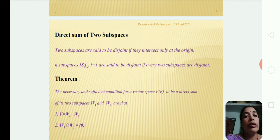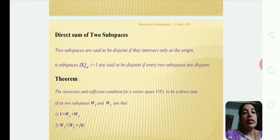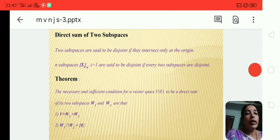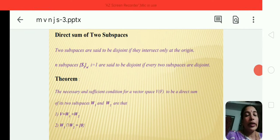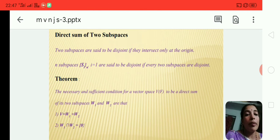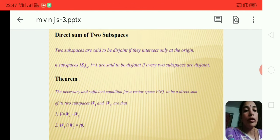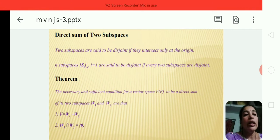Next theorem: the necessary and sufficient condition for a vector space V over F to be a direct sum of its two subspaces W1 and W2 is: first, V = W1 + W2, and second, W1 ∩ W2 = {0}. These are the important theorems from the second unit.